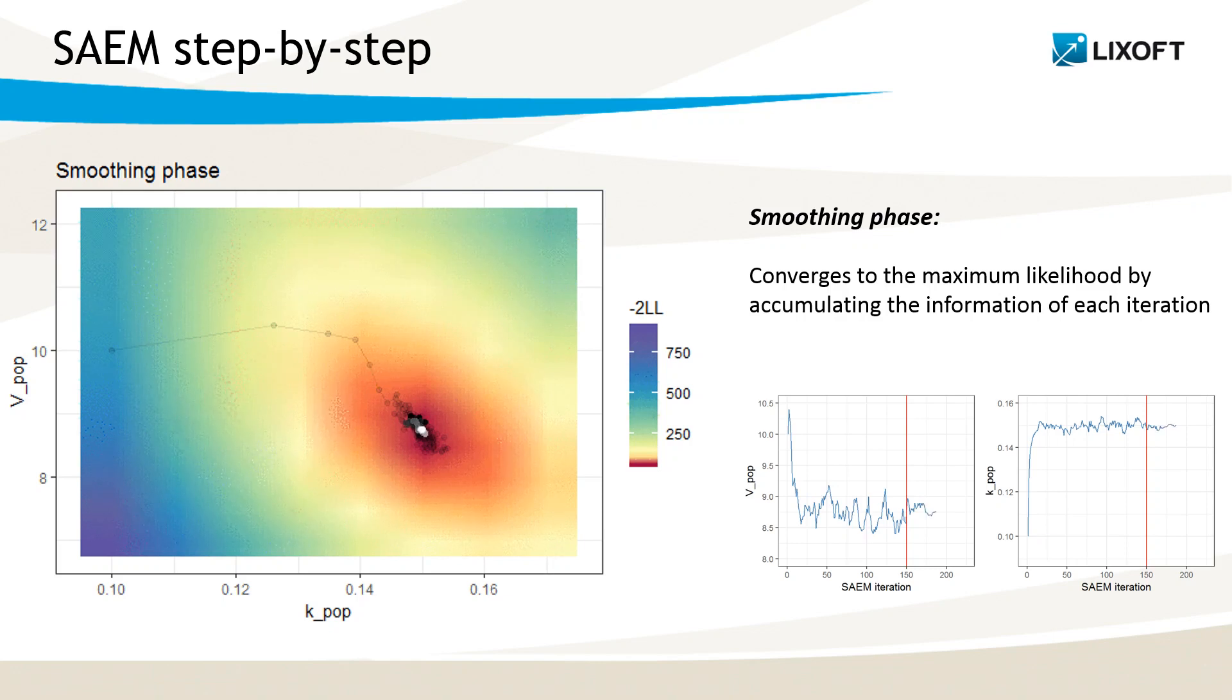Now let's visualize the entire smoothing phase. We can really see how accumulating more and more individual parameters permit to smoothly reach the maximum likelihood. This was a small example. As I have said, for more complex models, the procedure is a bit more complicated, but the concepts remain the same.